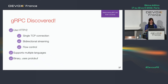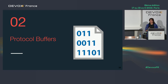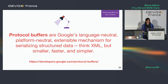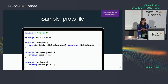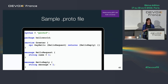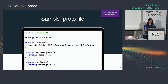We discovered what gRPC is and learned about its features. Now let me tell you more about protobuf — it's the IDL used in gRPC. According to Google, protobuf is a language-neutral, platform-neutral mechanism for serializing structured data. Think of it like XML or JSON, but simpler, faster, and smaller. You write a protofile that looks like code, and in this file you define your service and RPC calls — including messages for requests and replies.